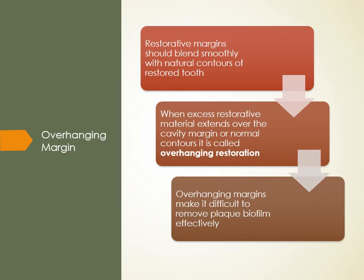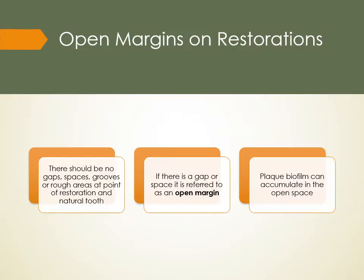Open margins occur when there are gaps, spaces, or grooves at the point where the restoration meets the natural tooth. Plaque biofilm accumulates in that open space and goes all the way around the tooth. Poorly contoured restorations can exacerbate periodontal conditions — even when the bacteria and inflammation are the underlying cause of periodontal disease, a poorly contoured restoration completely worsens that condition, and these patients may also have calculus contributing simultaneously.